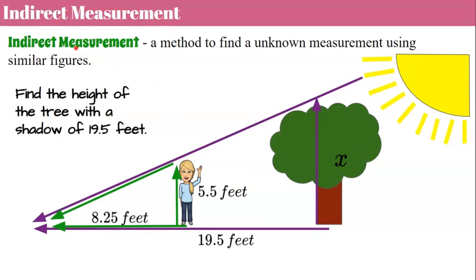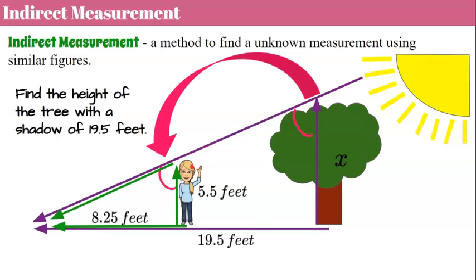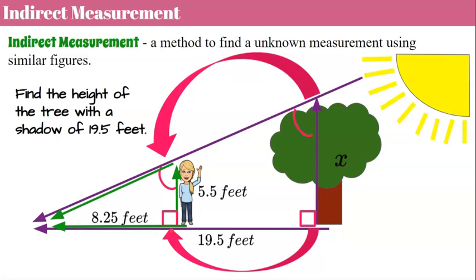We're going to use angle-angle similarity along with indirect measurement to find an unknown height using similar figures. We want to know the height of this tree, which is too tall to measure directly. The sun shines down on the tree and on me at the same angle, so the angle formed at the top of the tree and the angle at my head are corresponding congruent angles. Both the tree and I stand at right angles to the ground, so the triangle formed by my height, my shadow, and the sun is similar to the triangle formed by the tree's height, its shadow, and the sun.